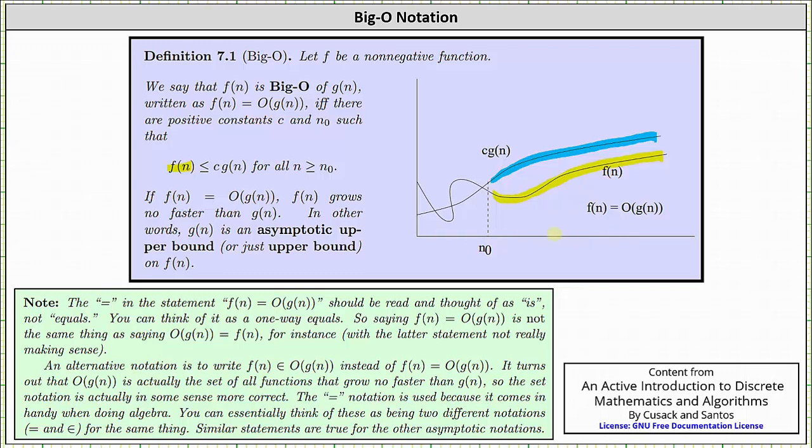If f(n) is Big-O of g(n), f(n) grows no faster than g(n). In other words, g(n) is an asymptotic upper bound, or just upper bound, of f(n). And looking at the graph, hopefully that does make sense.